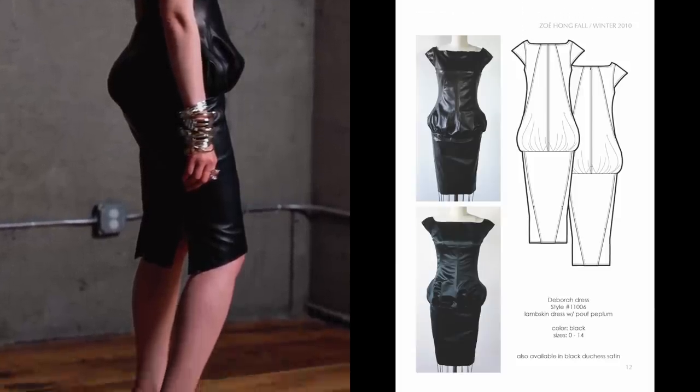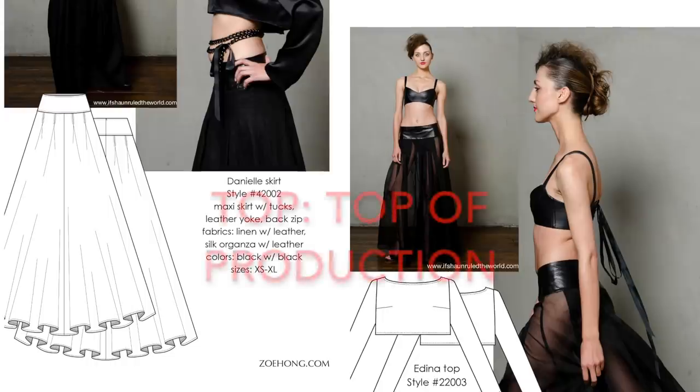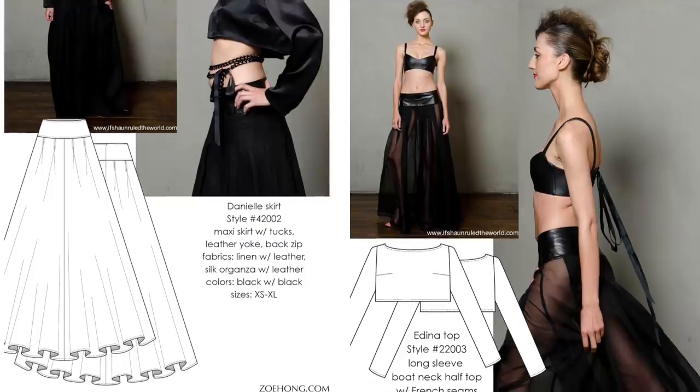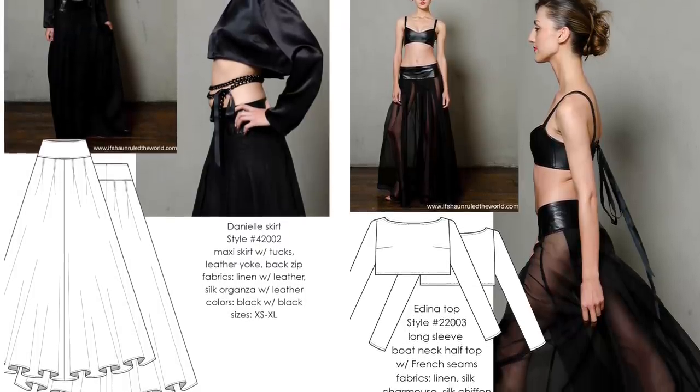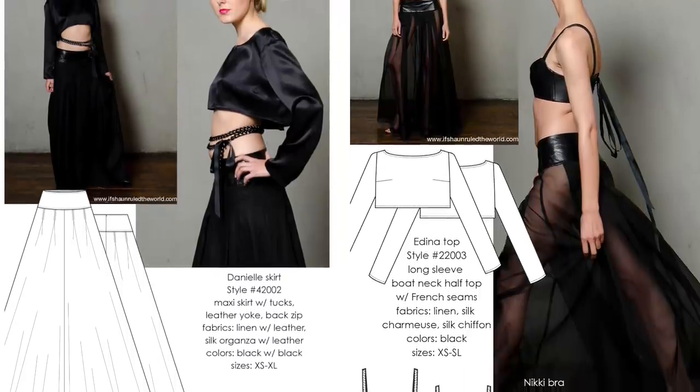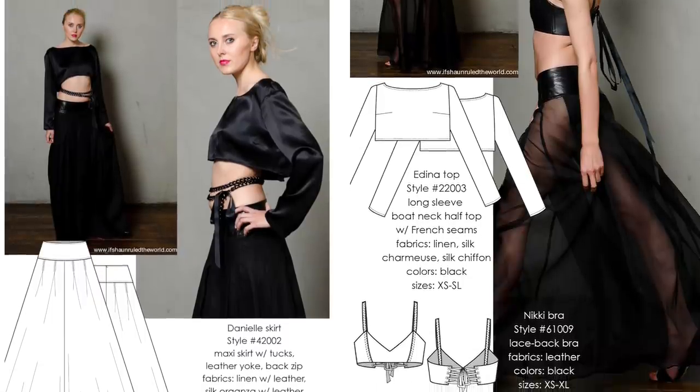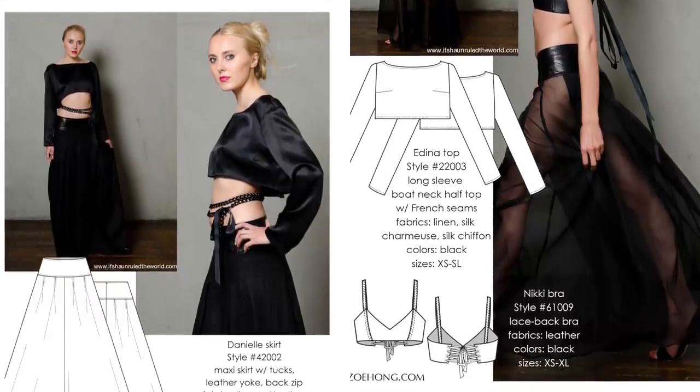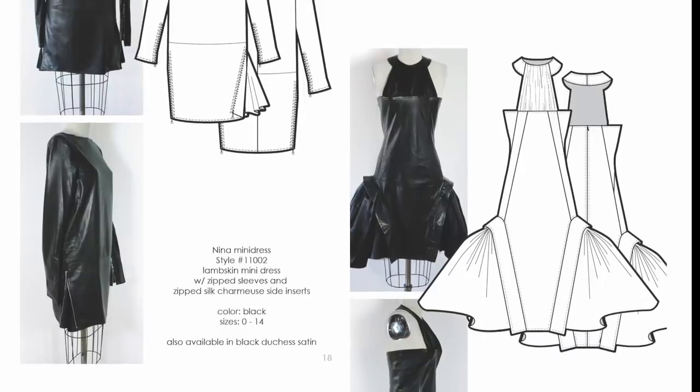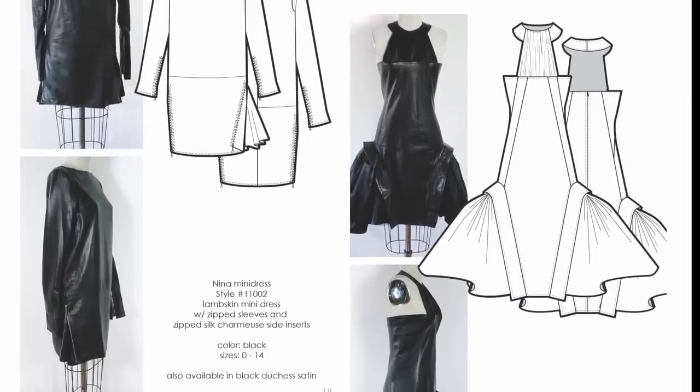When the factory starts sewing, they should send you a T.O.P. or TOP sample. T.O.P. stands for Top of Production. The factory starts running the production and sends you the first one off the line, because that's what the production run is going to look like. Generally, people only do this on the first production run of a style. If you produce the exact same garment over and over again with the same sewing facility, you probably won't need more T.O.P. samples each time you sew up more.